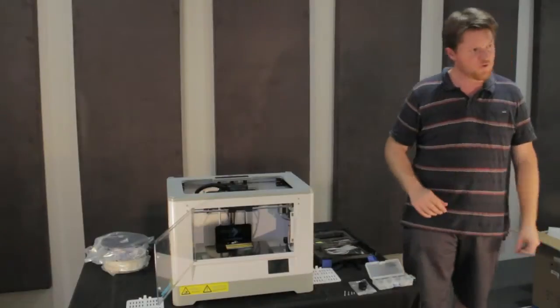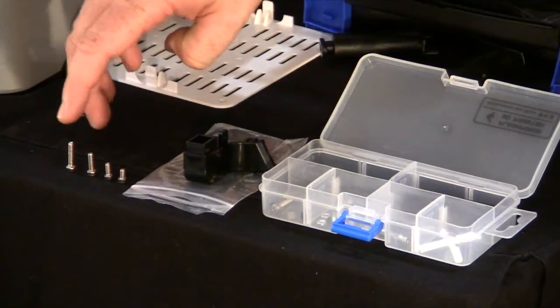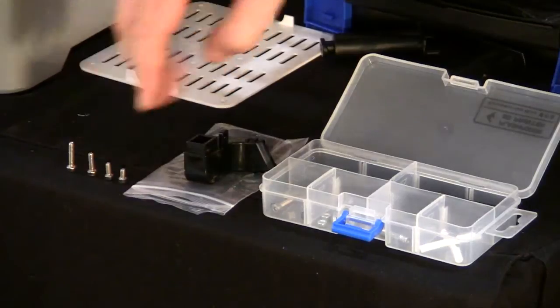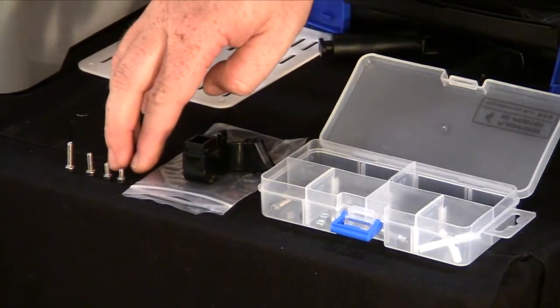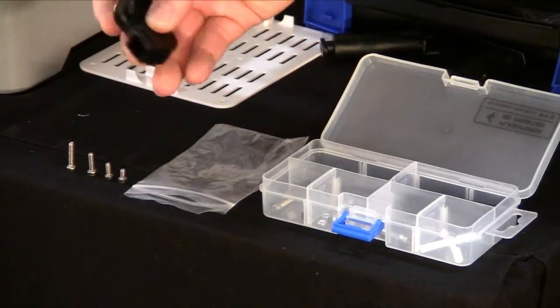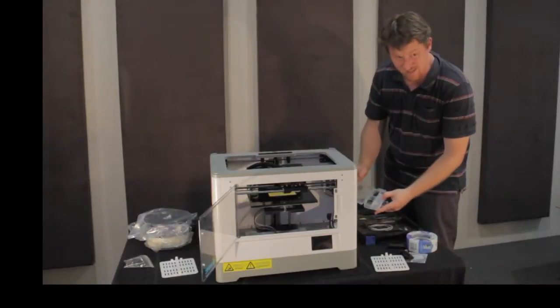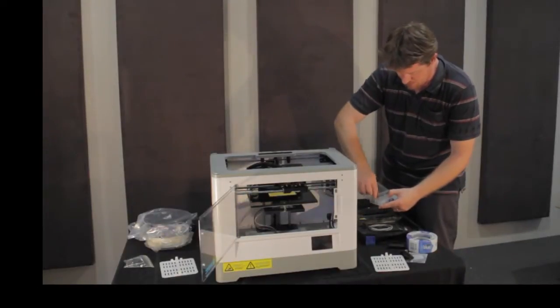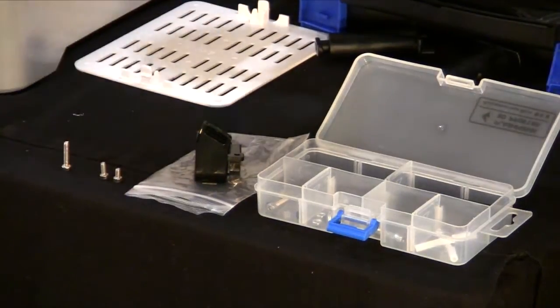Now the most confusing thing about the Flashforge Dreamer is you have four different types of screws. Three of these types you'll get in the box of screws and two of these types you'll also get in the little packet that has the air vent. We're not really going to use much of this but we do need an Allen key suited to the medium bolts.